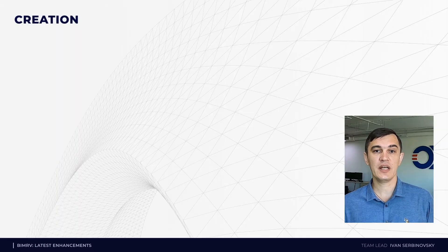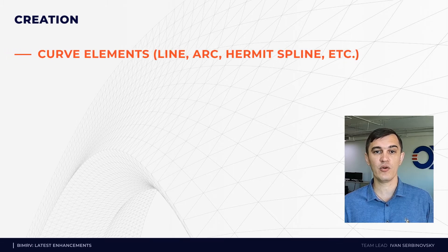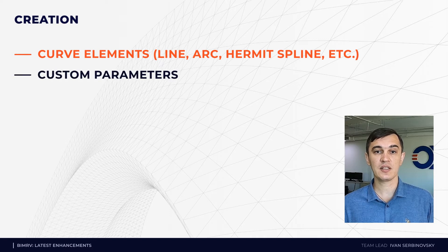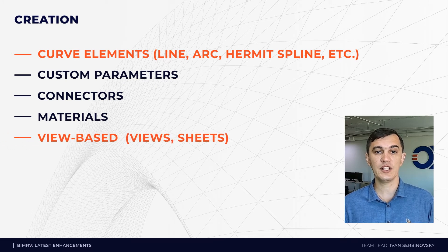The next very important area is the possibility to create or edit elements for Revit files. This functionality is under development. We can create a set of elements — first of all, a curve element, which contains geometry for different curves like lines, arcs, ellipses, hermite splines and so on. We can also create custom parameters in instances, connectors, and materials. We can create a set of view-based elements like 3D view, section view, levels and so on.